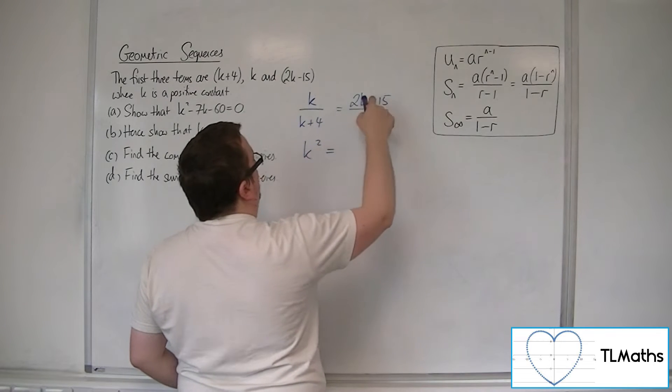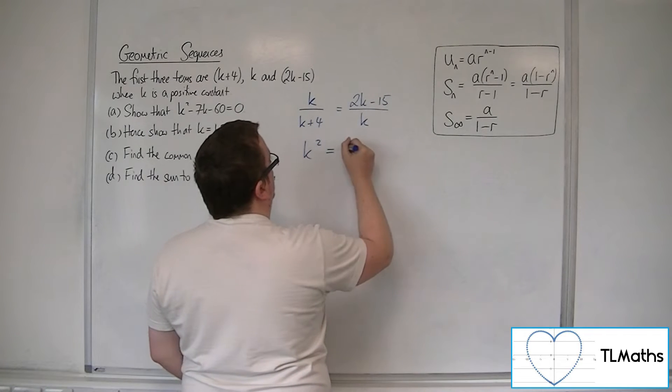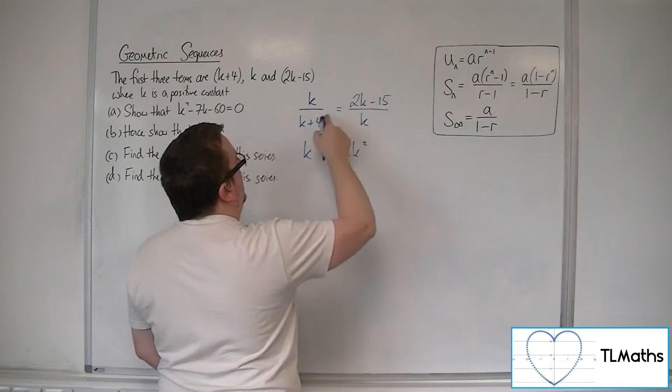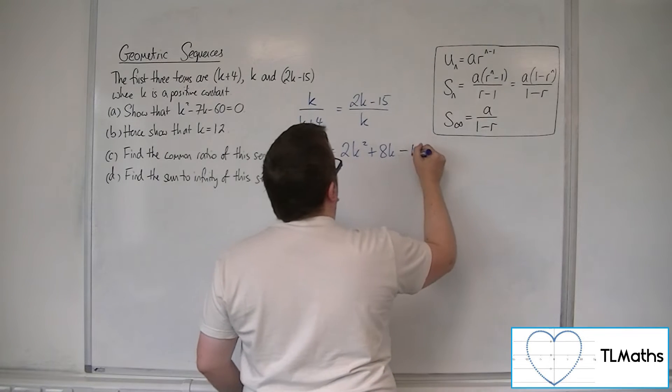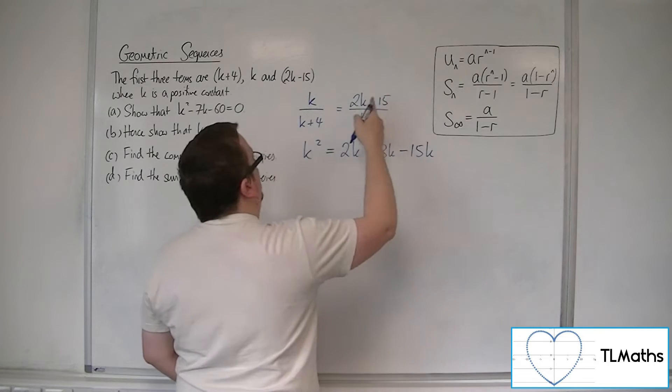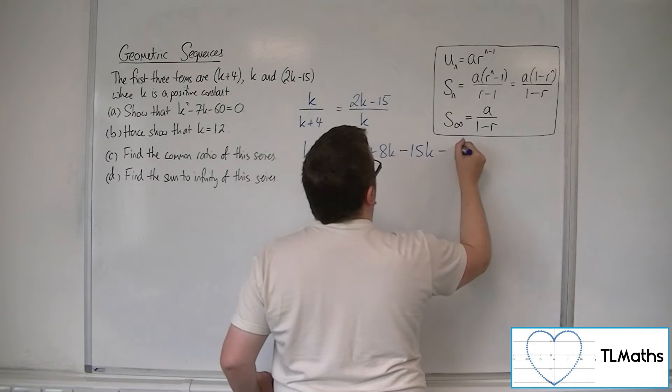we can multiply the k plus 4 by the 2k minus 15, which will be 2k squared. We'll get an 8k, we'll get a minus 15k, and we'll get a minus 15 times 4, so minus 60.